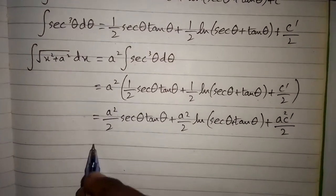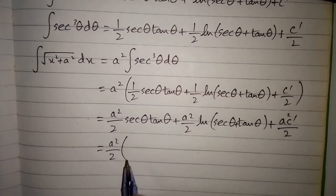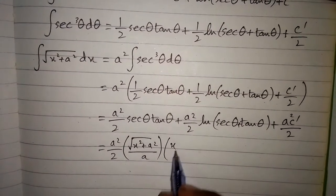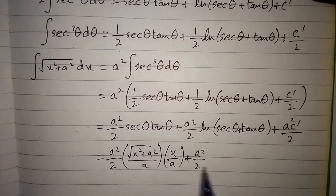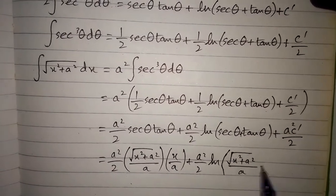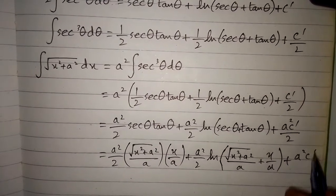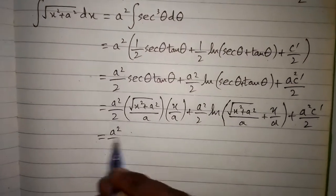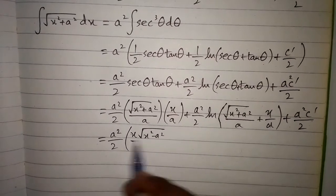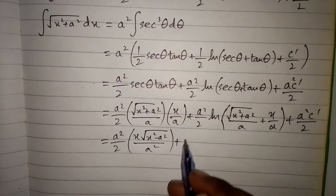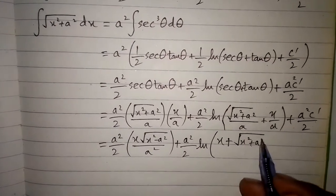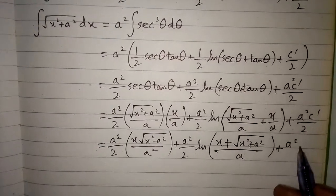Now we substitute back the values of sec θ and tan θ. The value of sec θ is √(x²+a²) over a, and tan θ is x over a. So we have a squared over 2 times (√(x²+a²)/a) times (x/a), plus a squared over 2 times ln of (√(x²+a²)/a plus x/a), plus a squared C′ over 2. After simplifying, this gives x over 2 times √(x²+a²), plus a squared over 2 times ln of (x plus √(x²+a²)) over a, plus a squared C′ over 2.